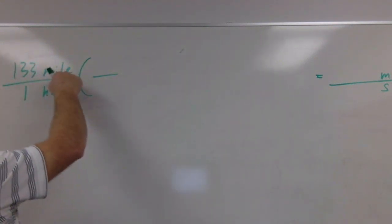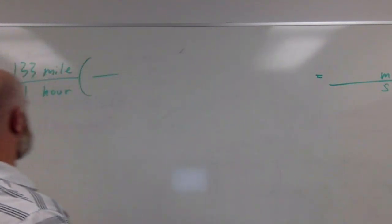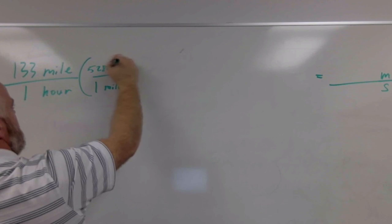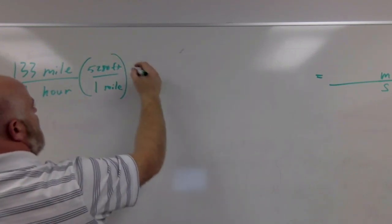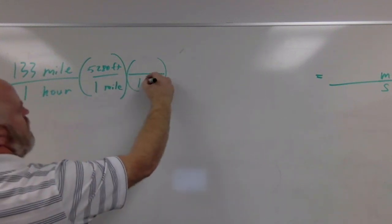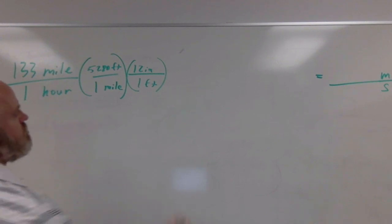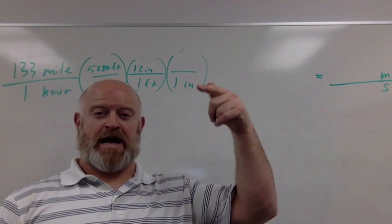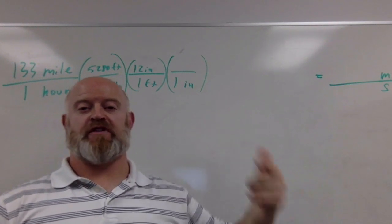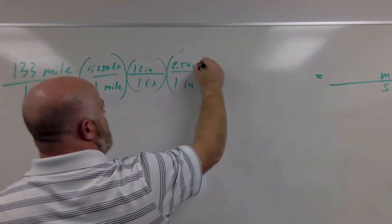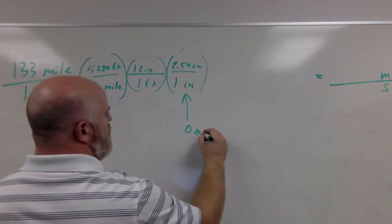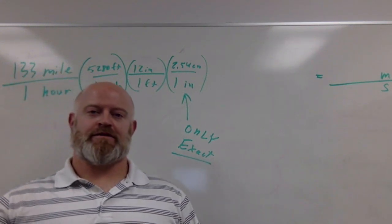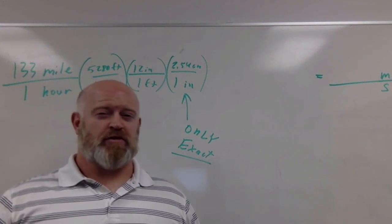First I have miles, I'm going to convert miles into meters first. For every one mile I know that there is 5,280 feet. I also know that for every one foot I have 12 inches. I know for every one inch—going back to our problem, the top of our slide—for every one inch is 2.54 centimeters. This is the only exact conversion between miles, feet, inches to centimeters and meters. There's no rounding here, so it's the best one to use.